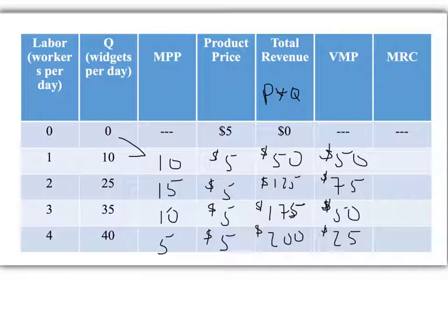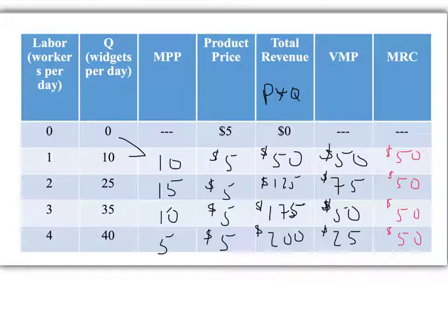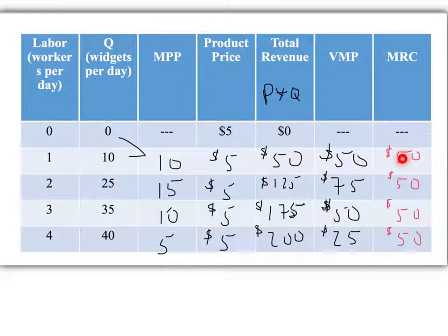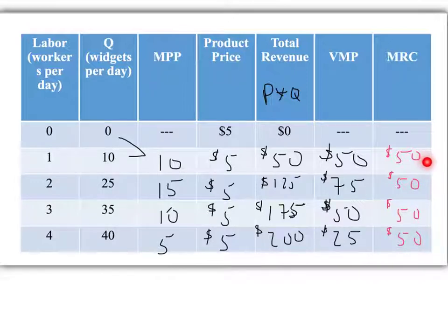Usually they'll give you the wage or marginal resource cost. We're not going to discriminate — we hire all workers at the same wage or MRC. Let's say the marginal resource cost for all units of labor is $50. Remember, you hire when VMP equals MRC. But you'll notice that happens twice, so here's how you work through it. Would I hire the first worker? Yes — the value they produce equals what they cost. Would I hire the second worker? Yes — they bring in $75 for the company and only cost $50, leaving the entrepreneur $25 in profit.